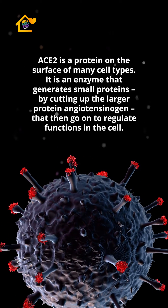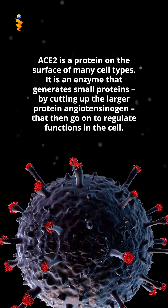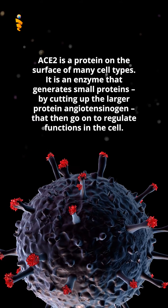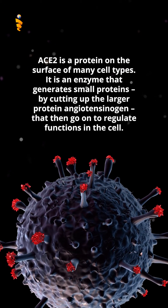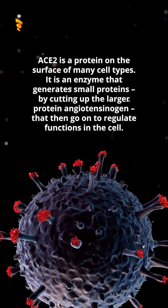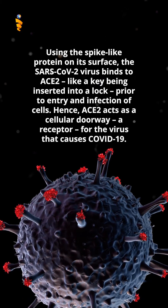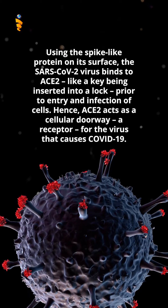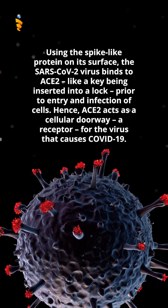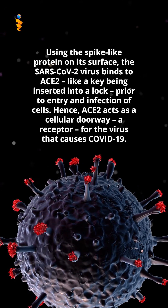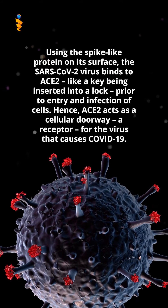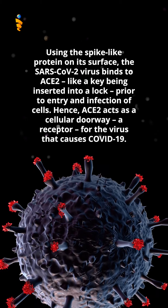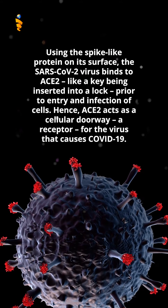ACE2 is a protein on the surface of many cell types. It is an enzyme that generates small proteins by cutting up the larger protein angiotensinogen, which then go on to regulate functions in the cell. Using the spike-like protein on its surface, the SARS-CoV-2 virus binds to ACE2 like a key being inserted into a lock, prior to entry and infection of cells. Hence, ACE2 acts as a cellular doorway — a receptor for the virus that causes COVID-19.